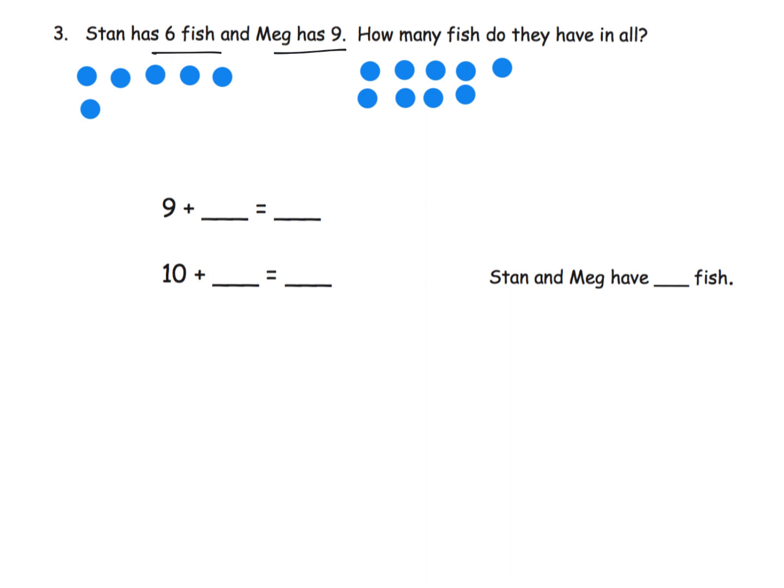We do need to label. It says we're supposed to label, so let's label these. This is Stan and this is Meg. Now we're supposed to circle to make 10. We're going to start with 9 over here, and we only need one more to make 10, so I'm just going to grab one. There we go.